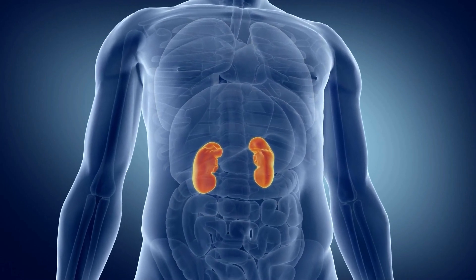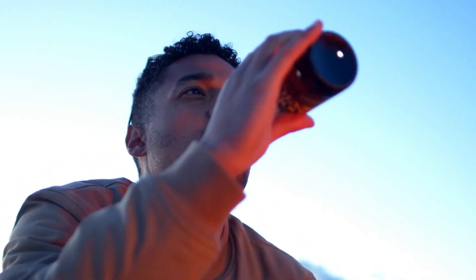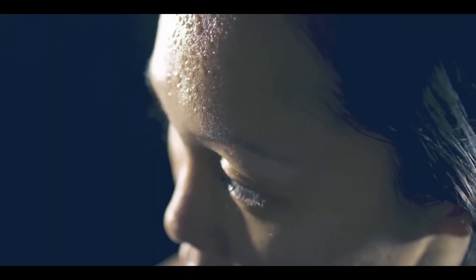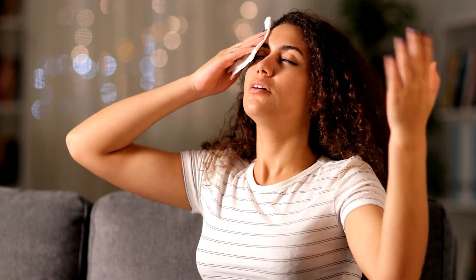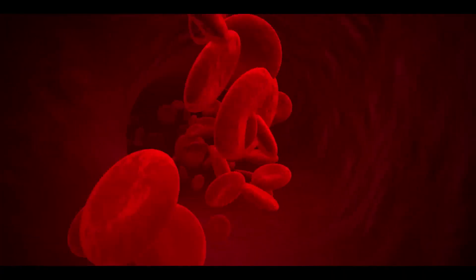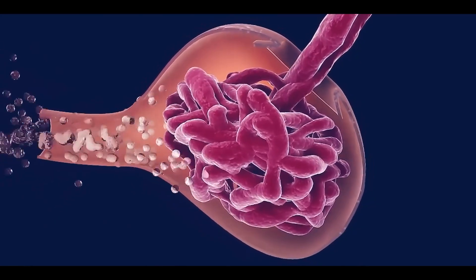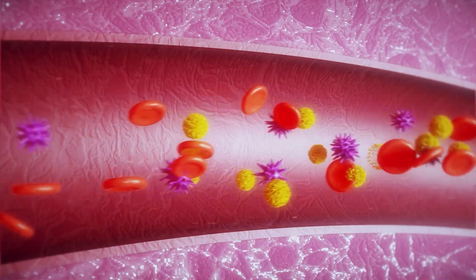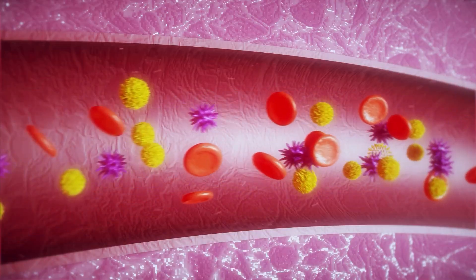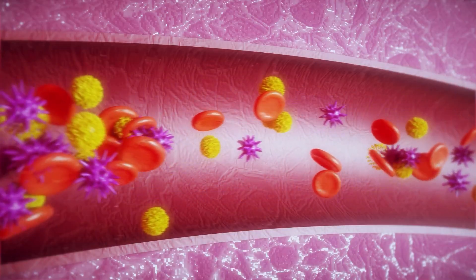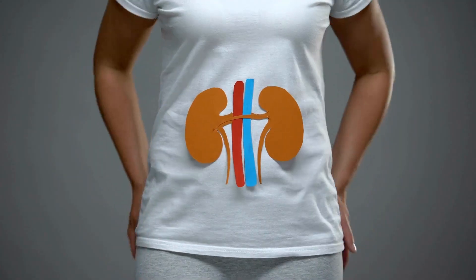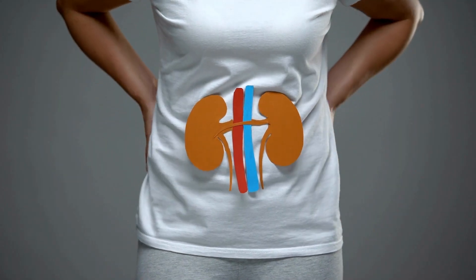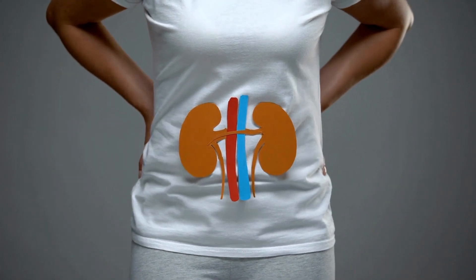Kidneys: Alcohol abusers experience constant heat loss from the skin, leading to dehydration. Increased blood flow to the kidneys affects their cells, causing waste accumulation in the blood and an imbalance in electrolyte levels. This can eventually lead to kidney failure.